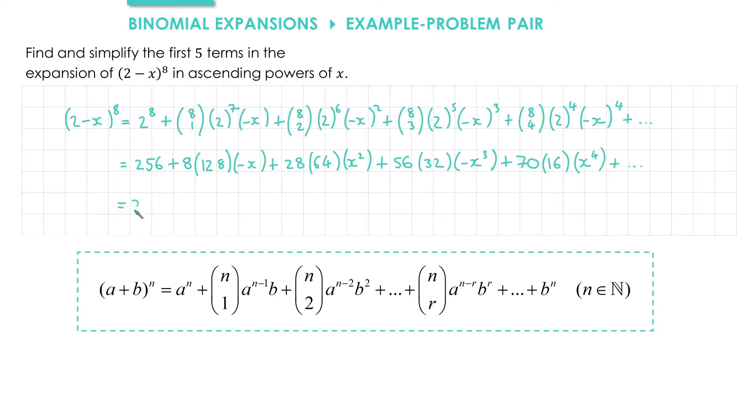Simplifying, we've got 8 times 128 times negative x. So that will be negative, and 8 times 128 is 1024.